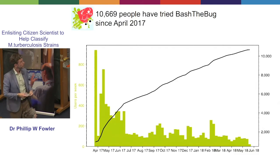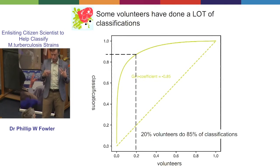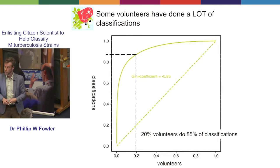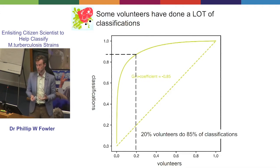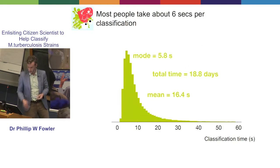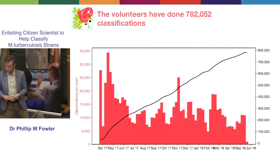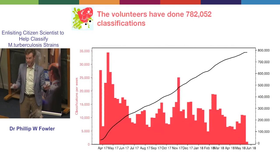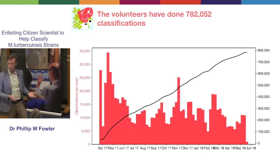We launched April last year. We've had nearly 11,000 people now try the project out — obviously a lot in the first month or two and then a steady stream after that. When you look at how much work people do, some people actually do a lot of classifications: the top 20% do over 80% of the classifications. Just the top 10 volunteers do nearly 20% of all the classifications to date. Our top volunteer, a lady who lives in Belgium, has done over 20,000 on her own. Most people take about six seconds per classification, but overall we're coming up on the 800,000 mark, which is far in excess of where I thought we'd be this time last year. You can see it's not showing much sign of tailing off — we've worked our way through three data sets now and we've got a lot more to go, thanks to Cryptic.